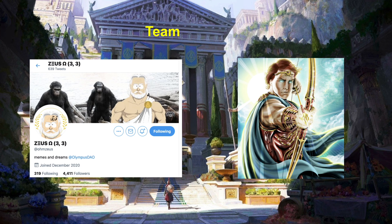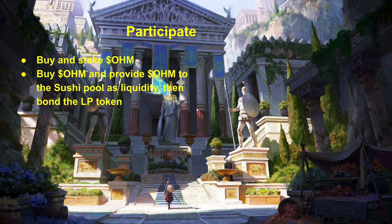The team was founded by Zeus and Apollo. Zeus does a lot of the economic design, and Apollo is the core developer behind the project. If you want to participate, the simplest method I recommend is to buy and stake OHM on the Olympus DAO website. Another alternative is to buy OHM, then provide it to the Sushi pool as liquidity and then bond the LP token.